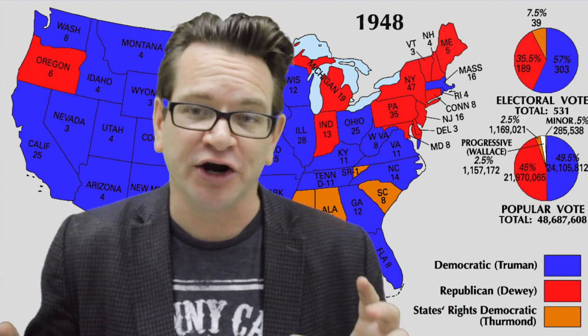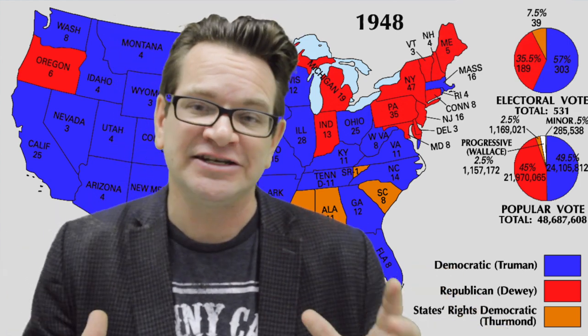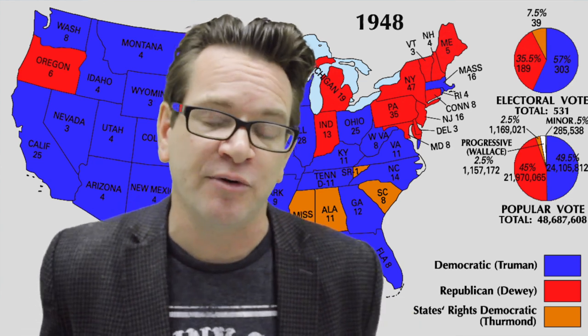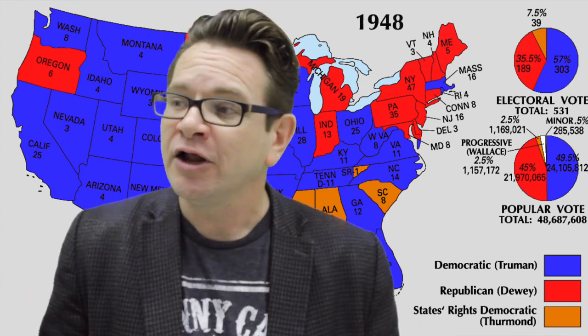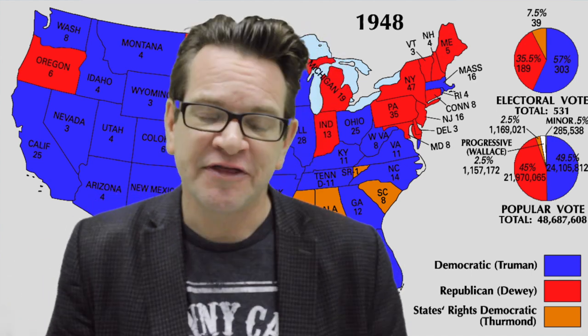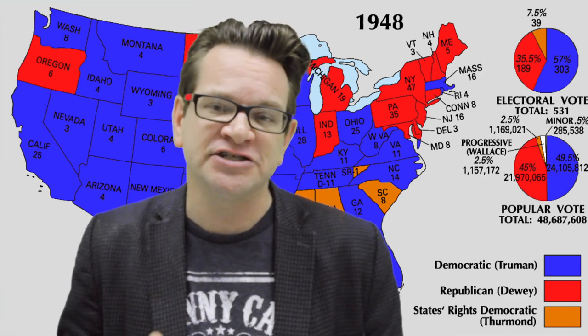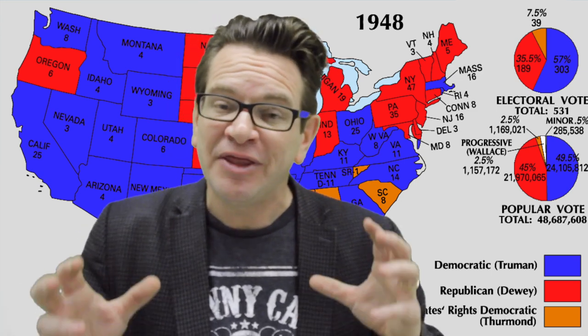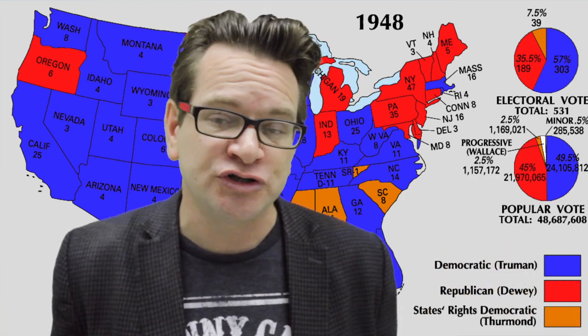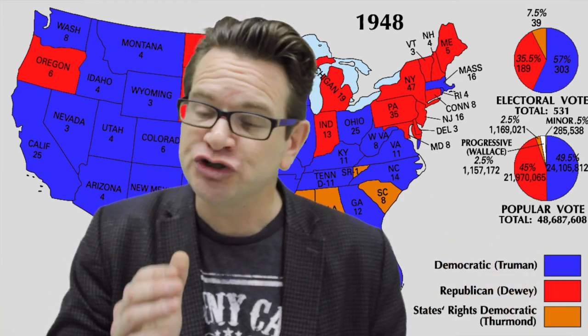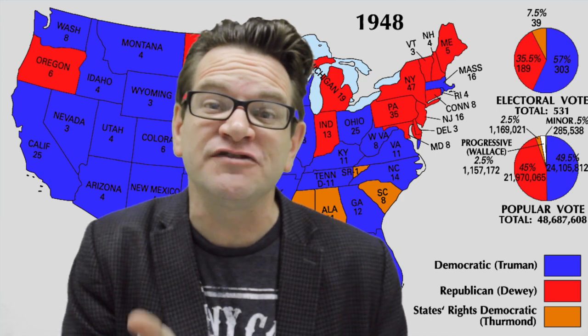The Chicago Tribune was so certain Dewey was going to win they printed the wrong headline on the newspaper — giving us that iconic photo of Harry Truman laughing in everybody's face. The 1948 election is really the last time we'll see third parties taking states — it happened in 1912 with the Bull Moose Party and now in 1948 with the Dixiecrats. The swing states are Ohio, Illinois, and California, and Truman squeaks by in all three. If Dewey had taken two of those three, it would have been thrown to the House of Representatives. If he'd taken all three, we'd be looking at a Thomas E. Dewey administration.